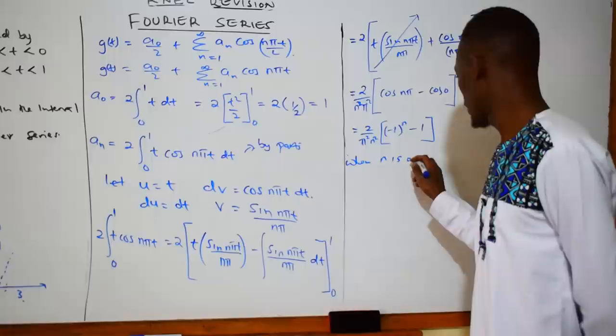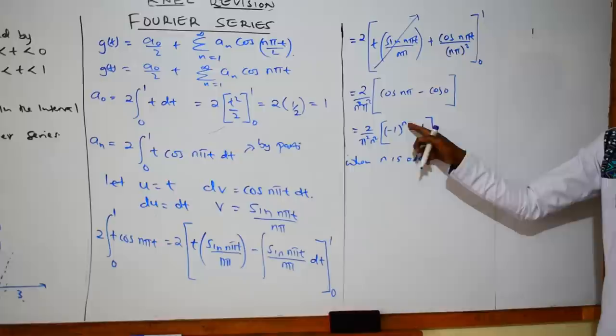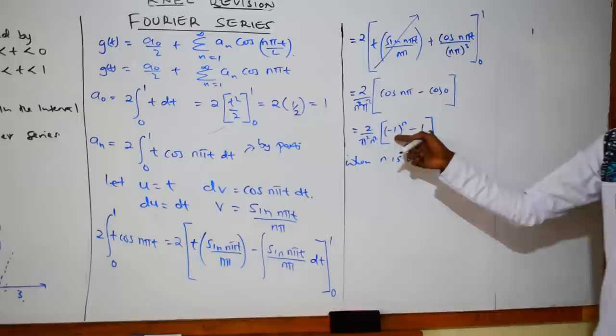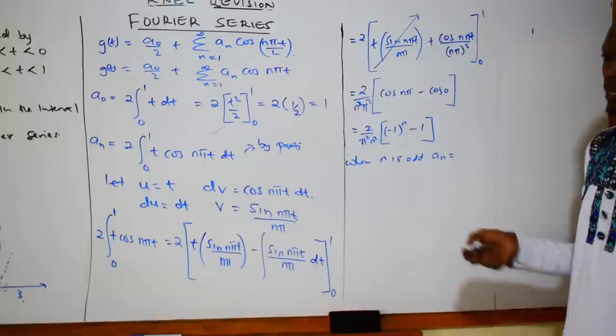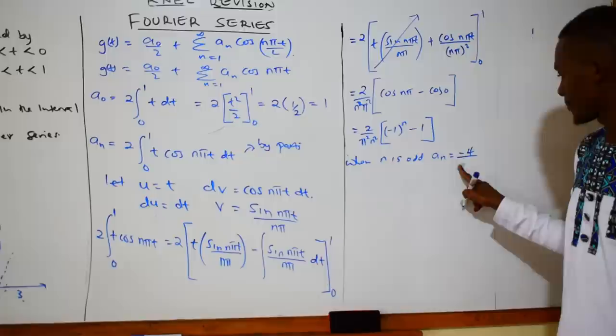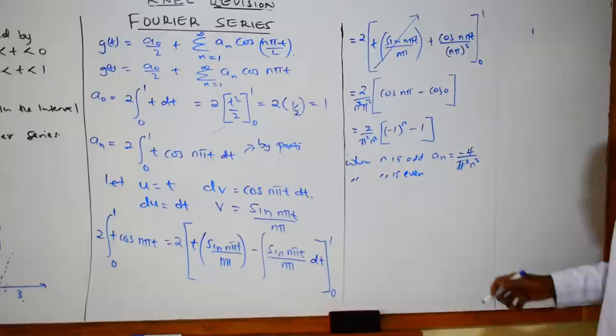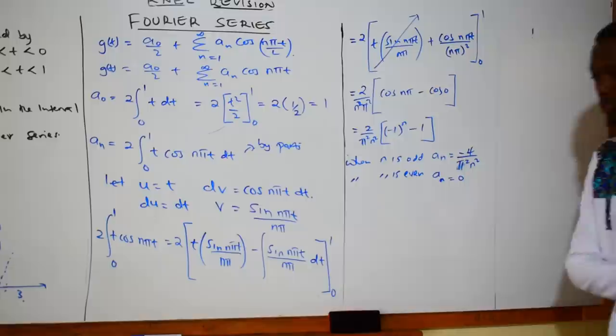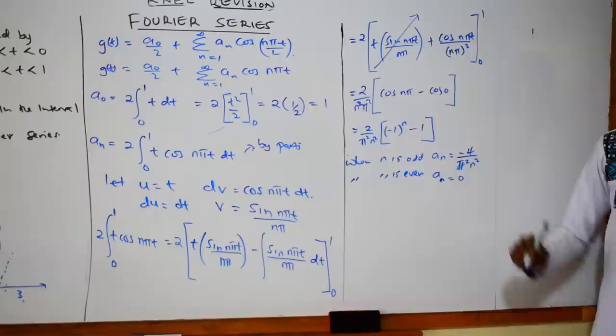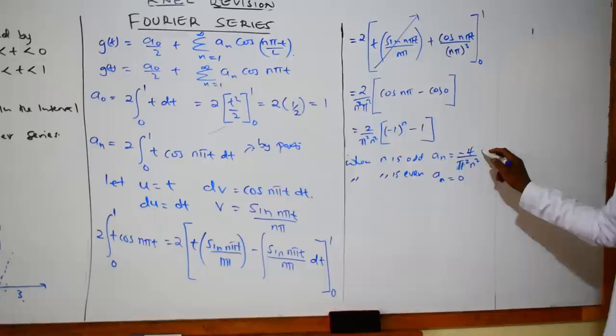So aₙ = 2/(n²π²)·[(-1)ⁿ − 1]. When n is odd: (-1)¹ = -1, so -1 - 1 = -2, times 2 gives -4, so aₙ = -4/(n²π²). When n is even: (-1)² = +1, so 1 - 1 = 0, therefore aₙ = 0.